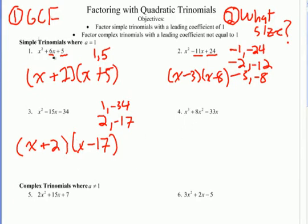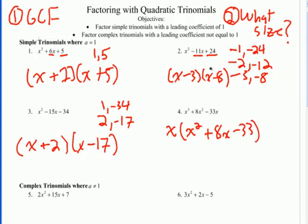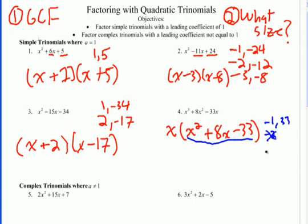First thing I look for is a GCF, and this time there is one — they all have an x in common, so I'll factor that out, and I'm left with x² + 8x − 33. What size is what's left inside? It's three terms — a trinomial, and again it's a simple trinomial. What multiplies to negative 33 and adds to positive 8? Because they multiply to be negative, they'll be opposite signs. Since they add to be positive, the bigger one must be positive. Negative 1 and positive 33? No. Does 2 go into 33? No. How about negative 3 and positive 11? That's it. So this factors into x(x − 3)(x + 11), and don't forget to include the GCF on the outside.